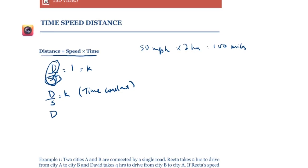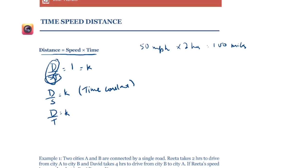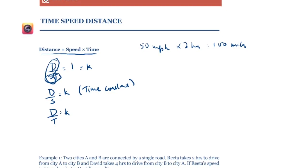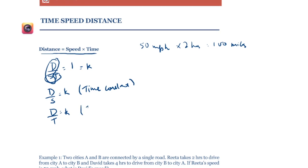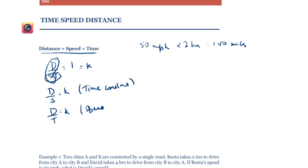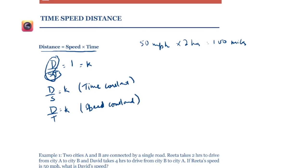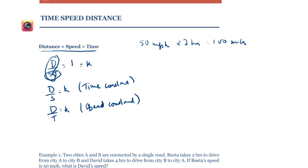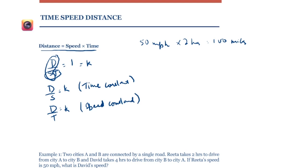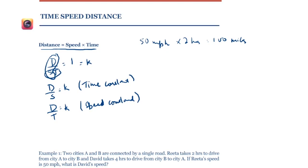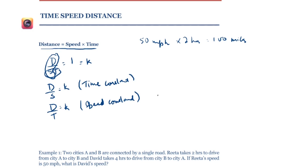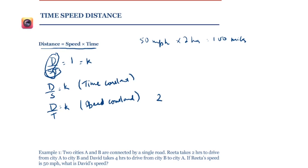Then d/t is a constant — d varies directly with t when speed is constant. If you and I are traveling at the same speed, and I travel for two hours while you travel for one hour, then the distance I cover will be twice the distance you cover.